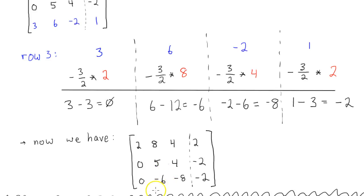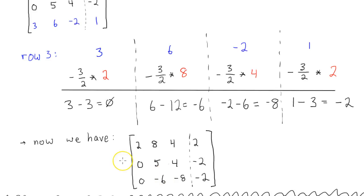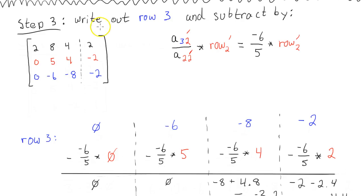And then now, we want to get this to 0. Okay? So step 3. We're going to write out row 3, and subtract by this guy. Remember, we don't want to use this guy, because if we do use this, this will come out to a non-zero. So if we use this guy, if we multiply by a 0, then we'll get a 0. So we want to use this guy.